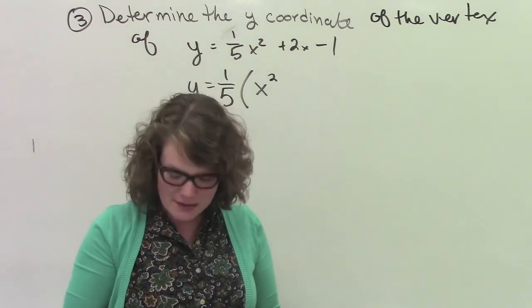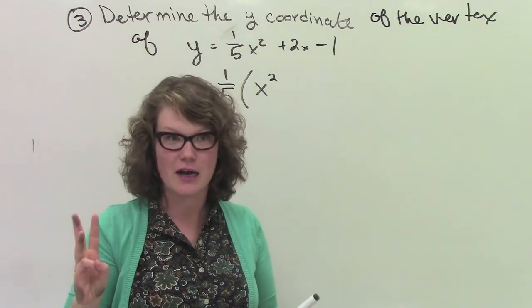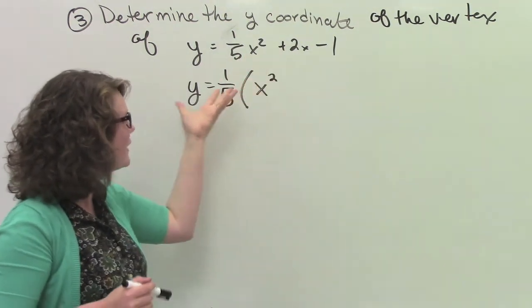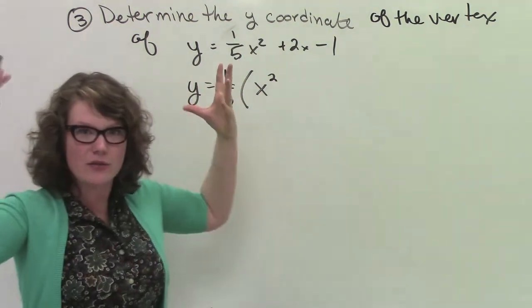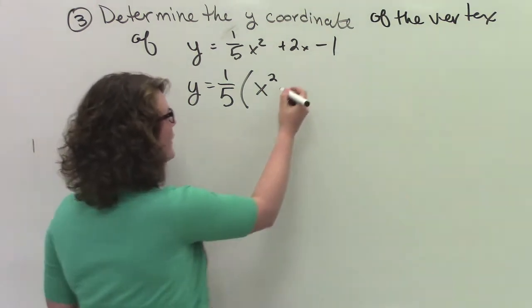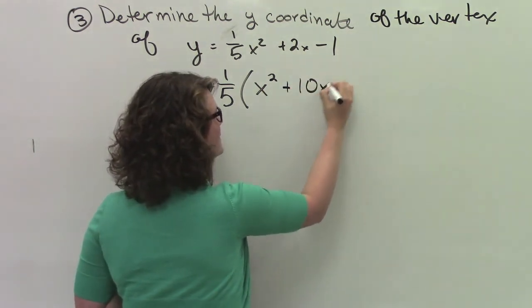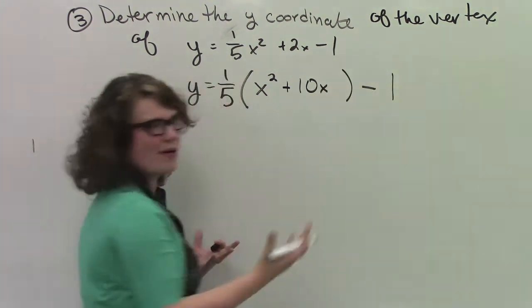Item number two, I messed up on this question, I think, three times before I actually got the real answer. And the reason why is because this whole factoring out a 1 fifth thing really threw me for a loop. I'm just going to write down what the answer should be, plus 10x minus 1. And now I'm going to explain it.